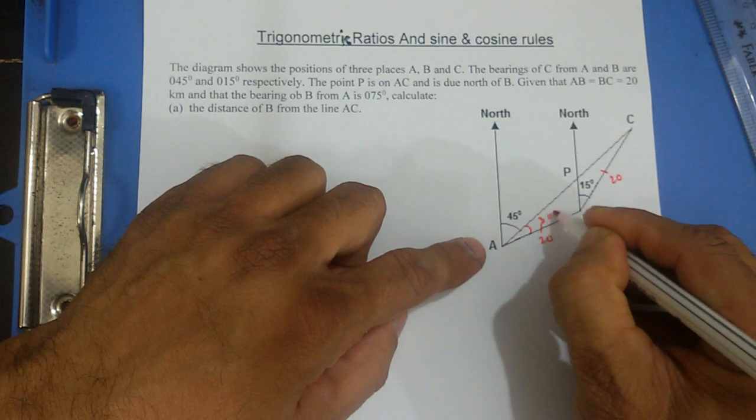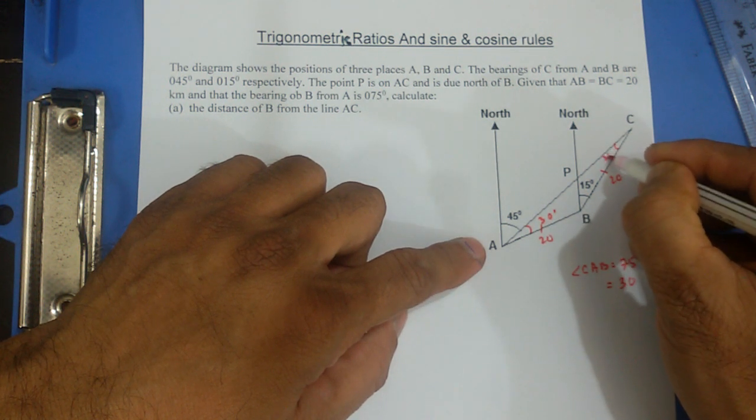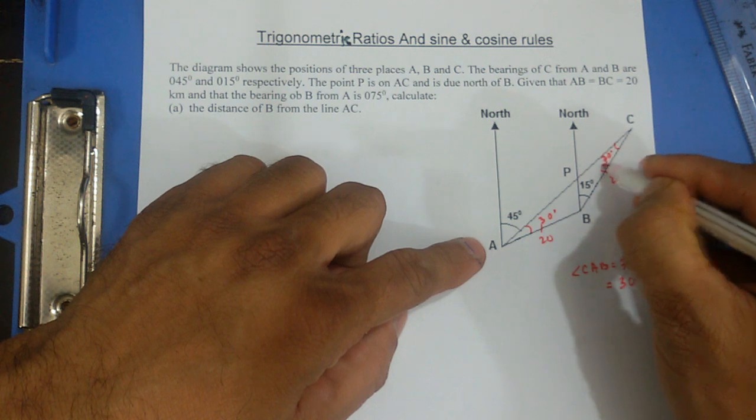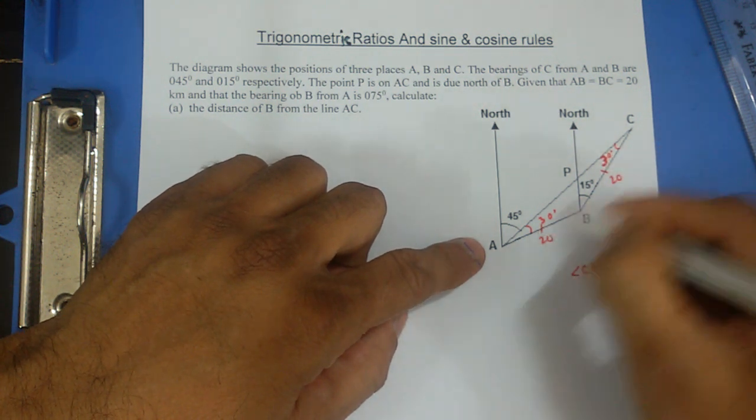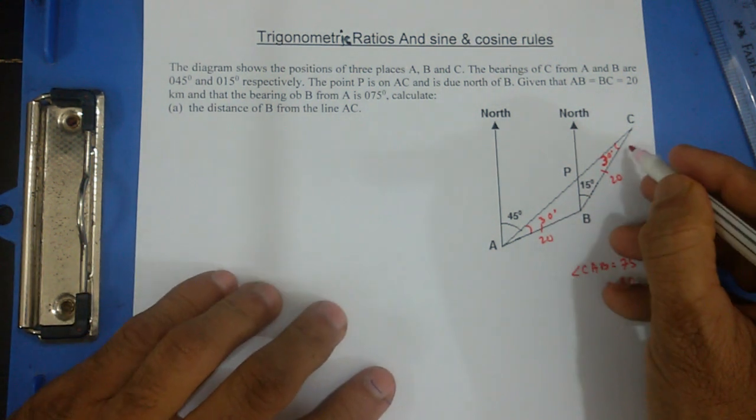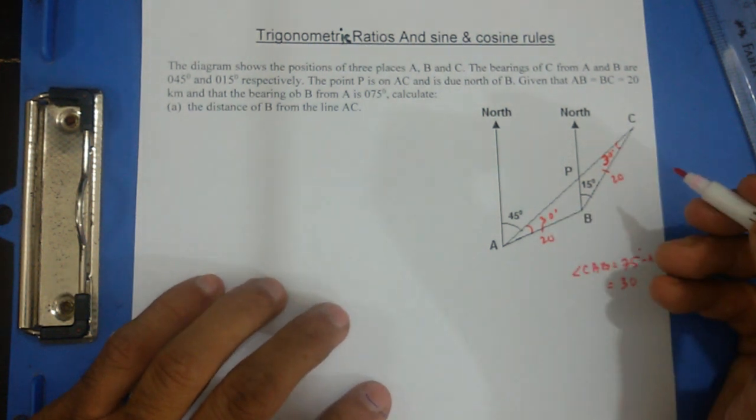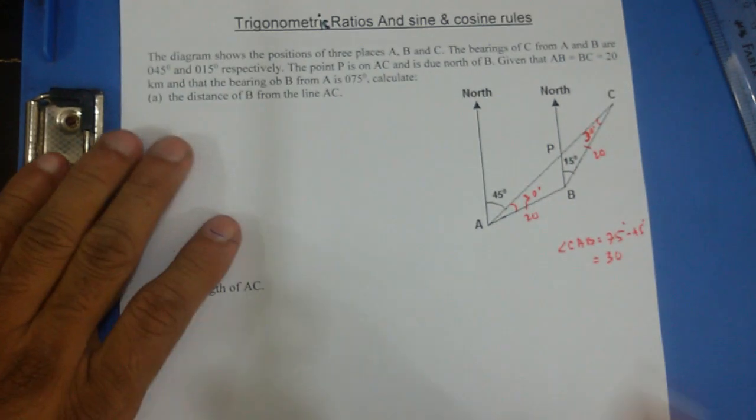So this is 30 degrees, and that makes this one 30 degrees as well, since this is an isosceles triangle. Isosceles triangle means two sides equal, and when these two sides are equal, that means their opposite angles are equal as well. So these are the information given.